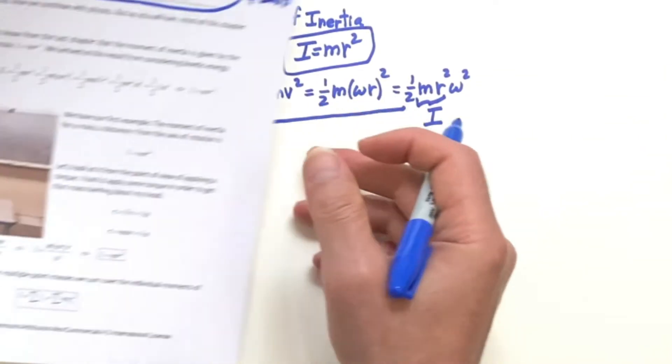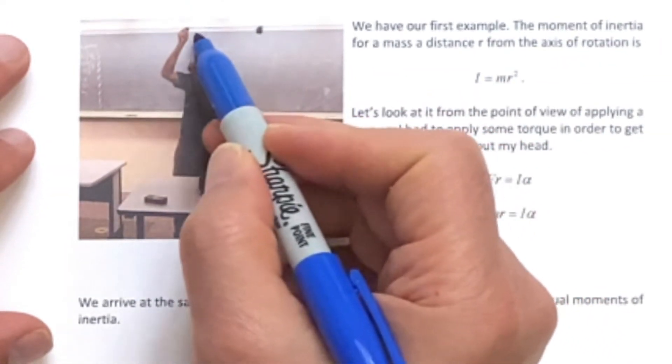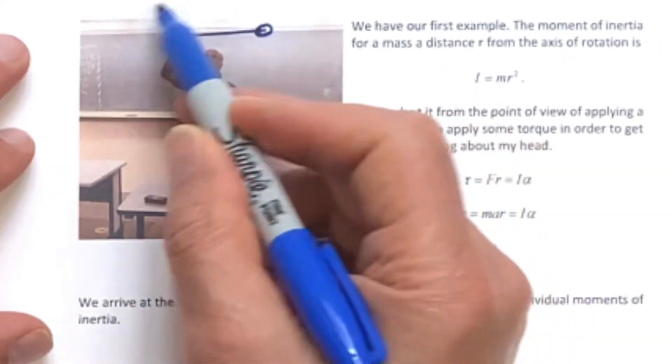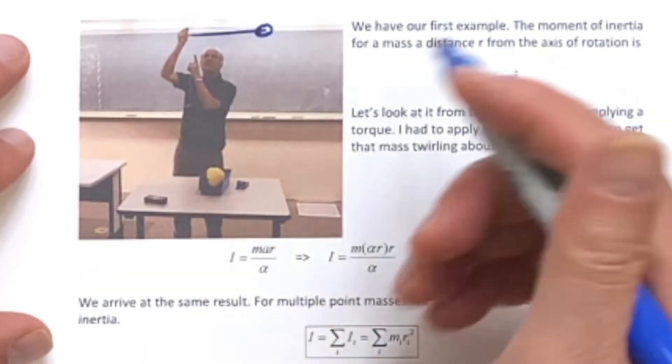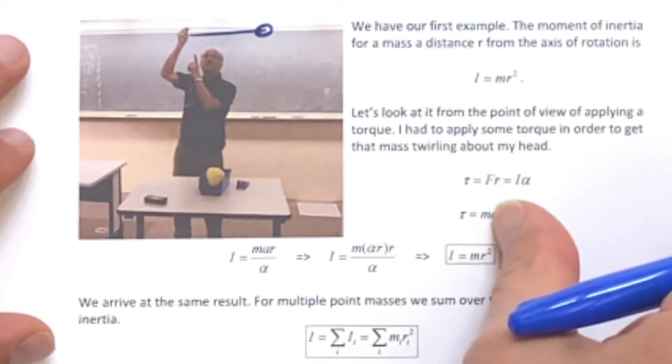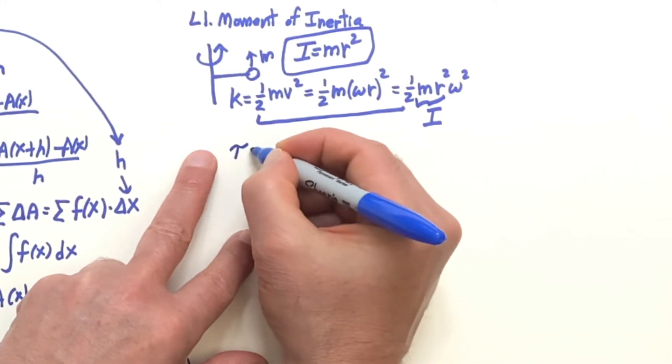Suppose we go back to the problem where I'm spinning a mass around over my head. And I had to get that thing sped up. So I had to apply some kind of a torque to get it sped up. So let's go ahead and look at the torque definition.